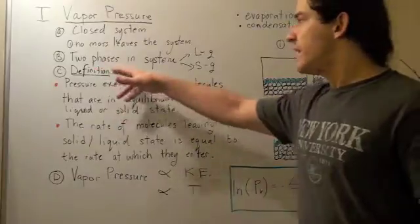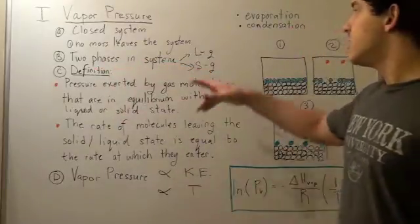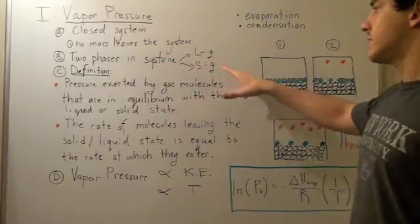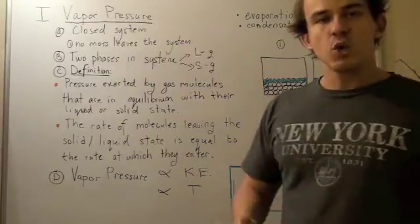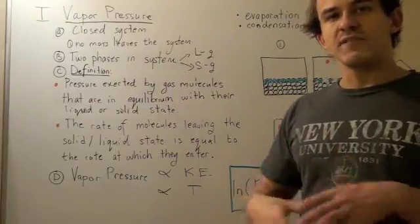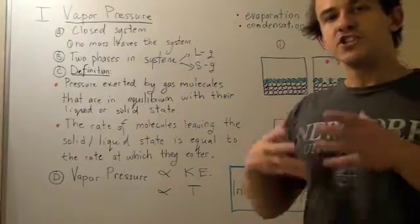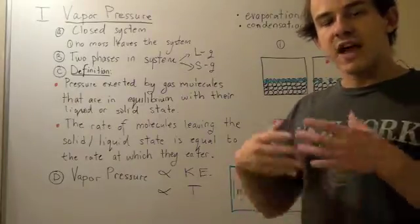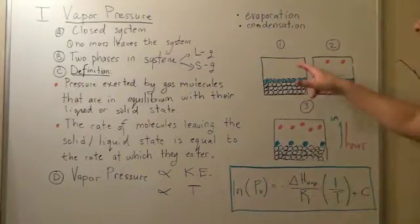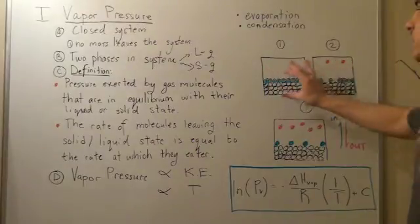We also talk about two phases being present in the system, either liquid and gas or solid and gas. Imagine we had a closed container, and in this container we had a vacuum, and we could somehow inject a liquid into this vacuum. So we have empty space and we have the liquid on the bottom.